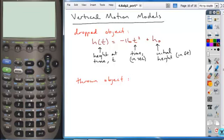And a thrown object is going to have the following function: h(t) is still going to equal negative 16t squared. However, there's going to be an adjustment in it, and that adjustment is going to be the initial force that was acting on the object.